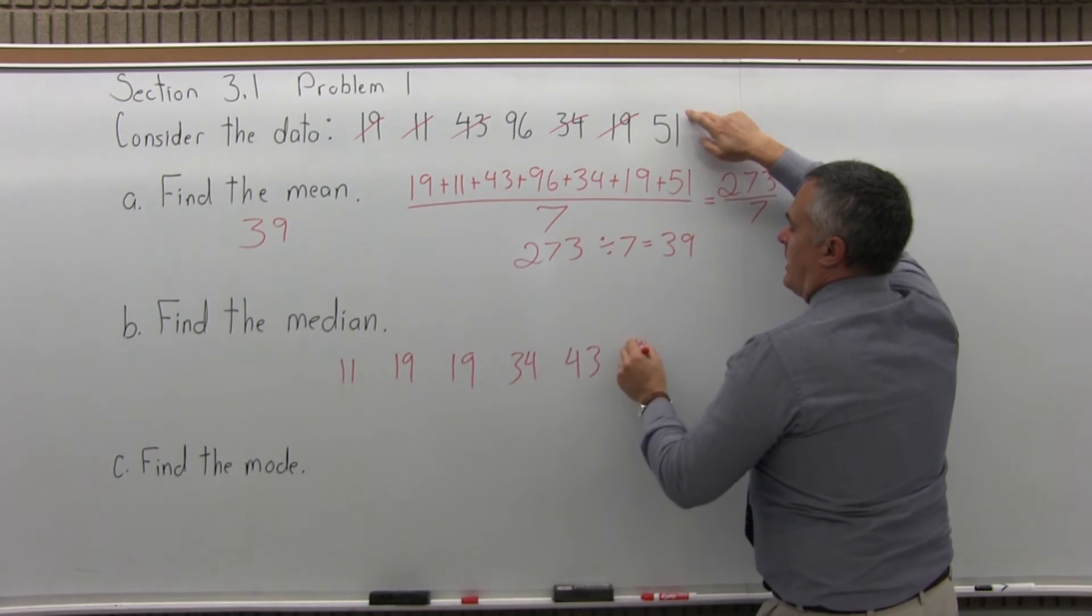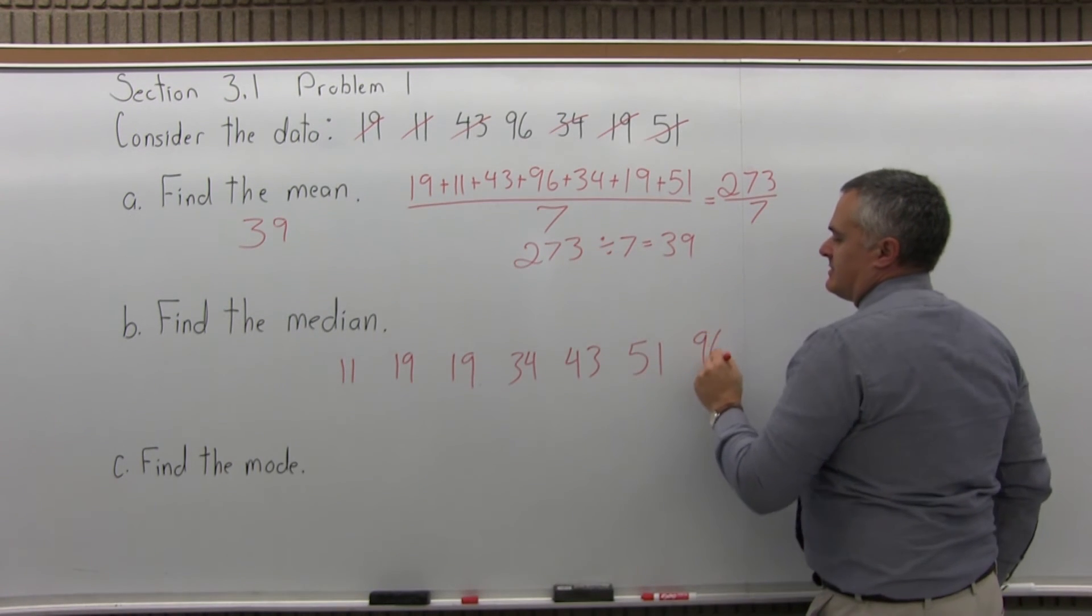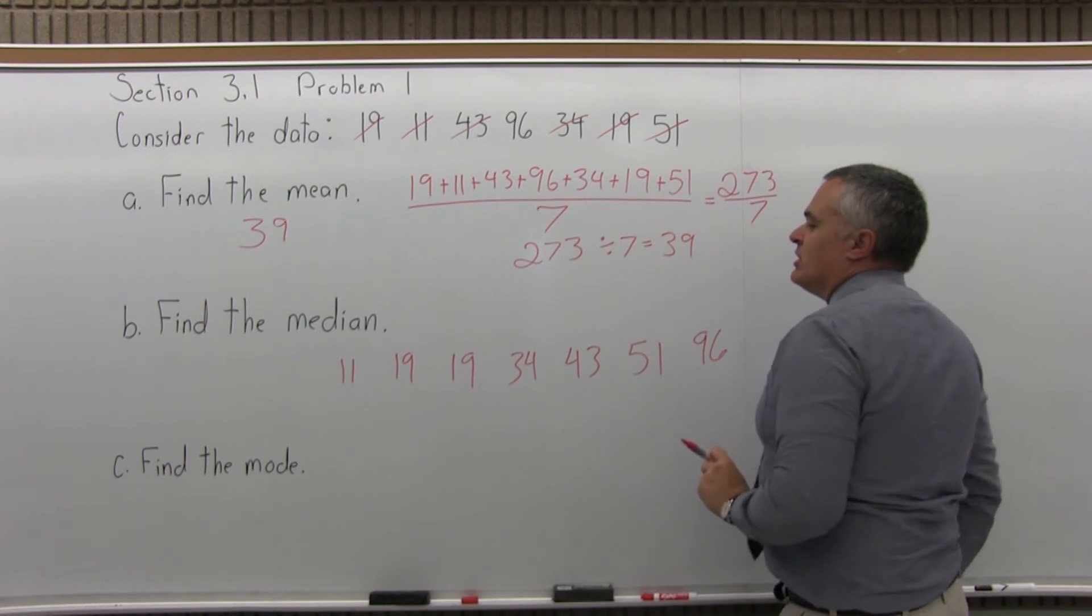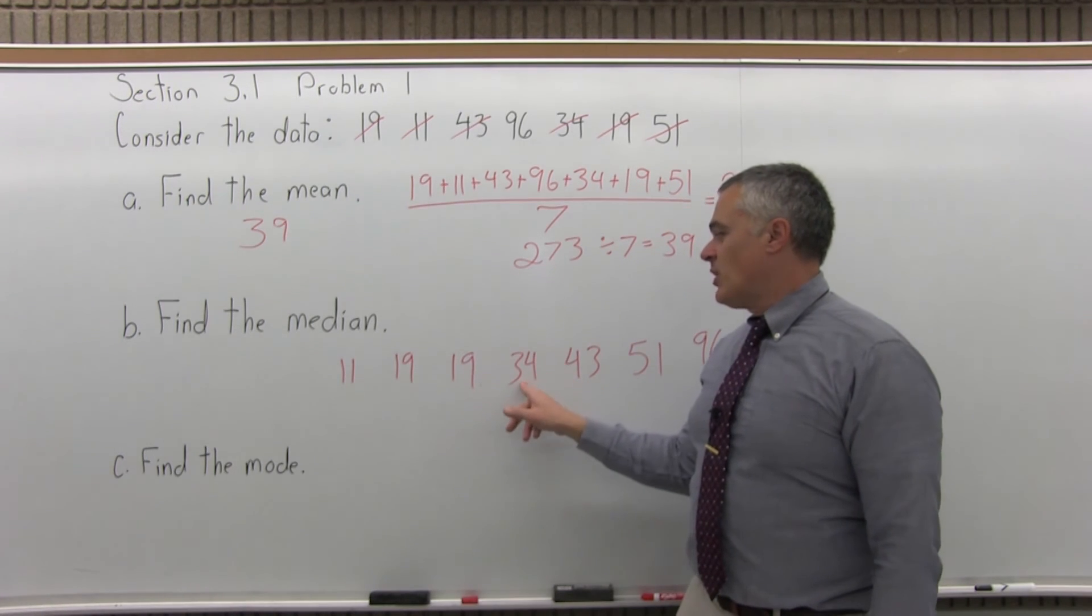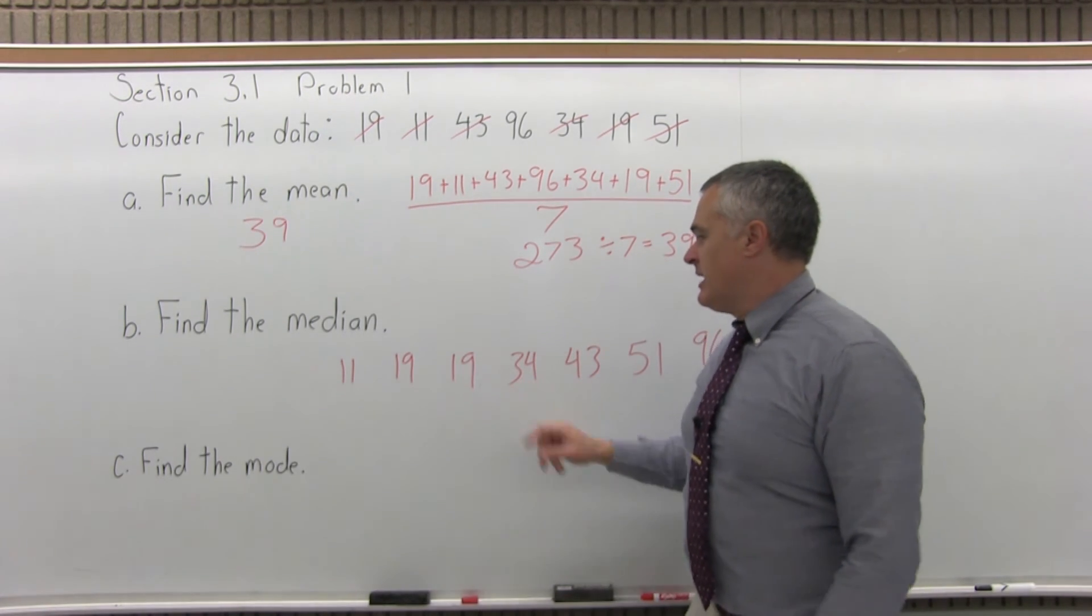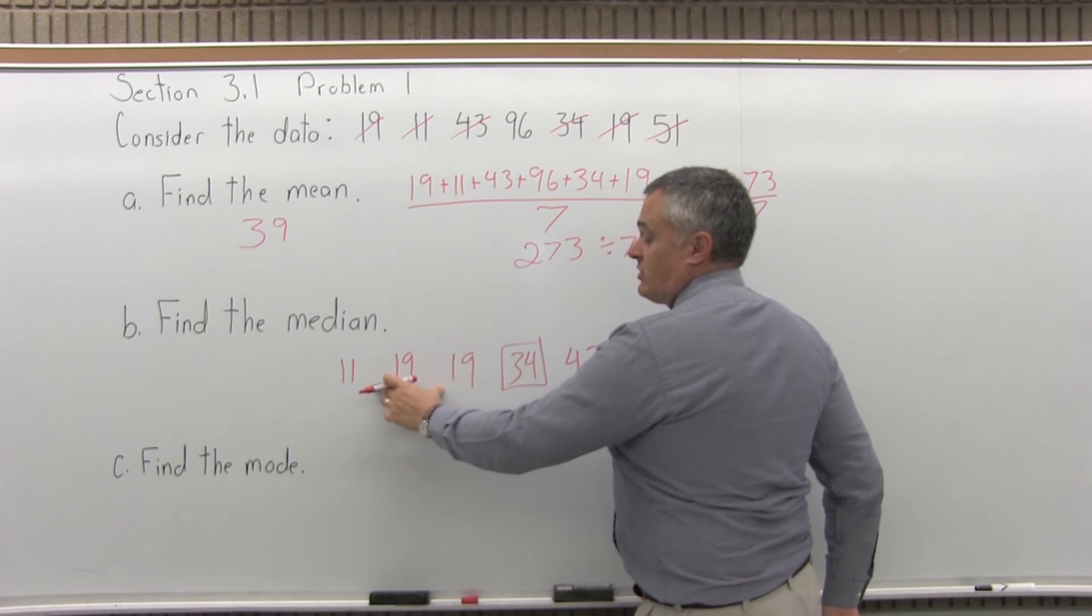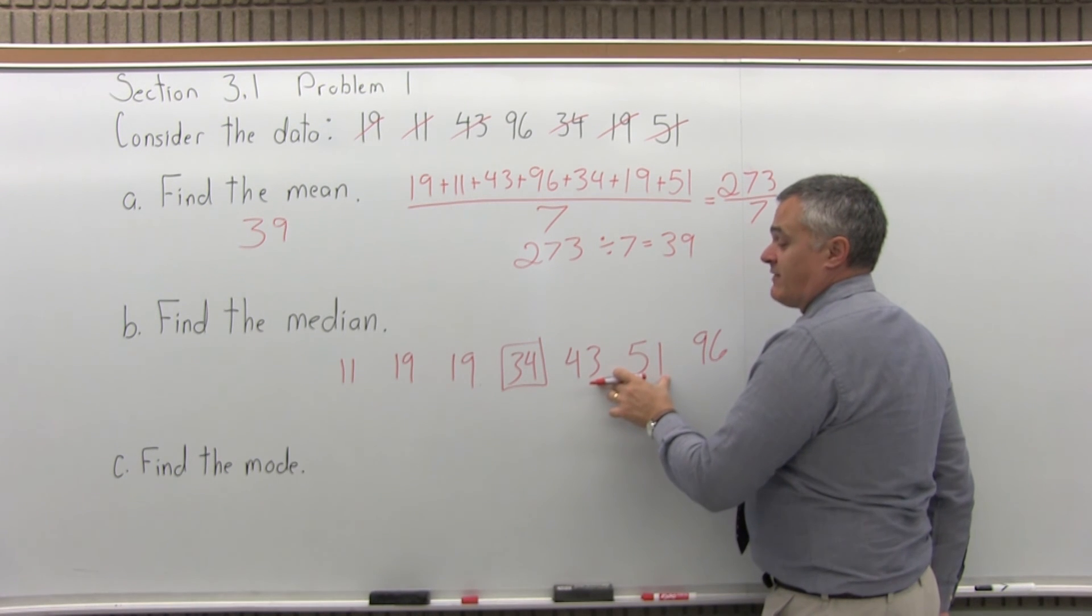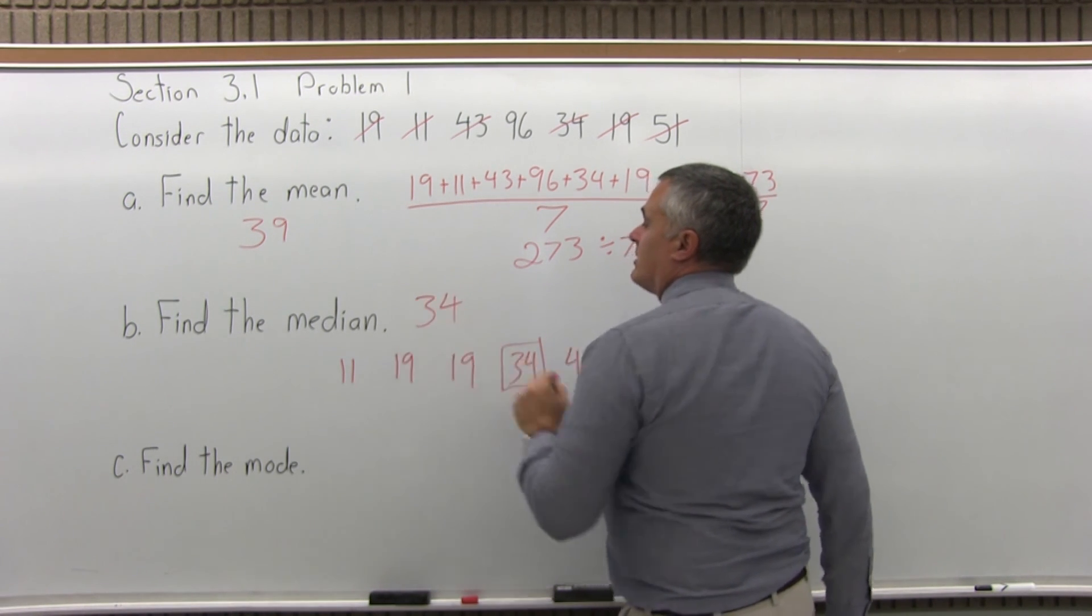After that is 43, and then 51, and 96. And I should have 7: 1, 2, 3, 4, 5, 6, 7. So 7 is an odd number. So with an odd amount of data, there should be one data value right in the middle. And the 34 is the middle value. There are 3 values to the left of it, or smaller, and also 3 values to the right of it, or larger. So the middle value is 34.